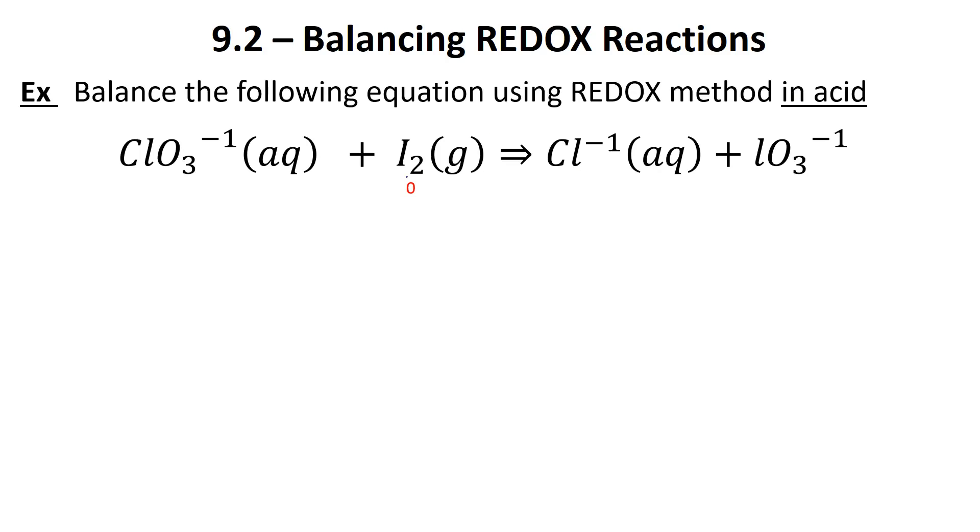First things first, let's figure out the oxidation numbers. I like to start with the gas, the one in the elemental state. Iodine has a charge of zero. Over here with the other iodine, we know oxygen always has a charge of -2 in this situation. Technically there's -6 here, the whole thing equals -1. This is a +5. Iodine has lost electrons, it's gone from 0 to +5.